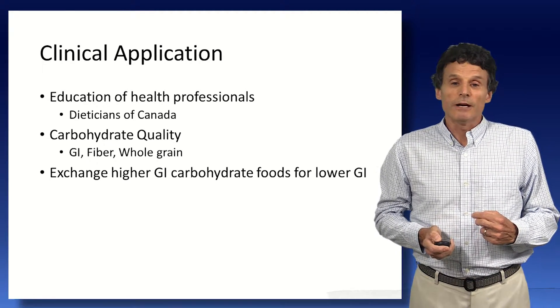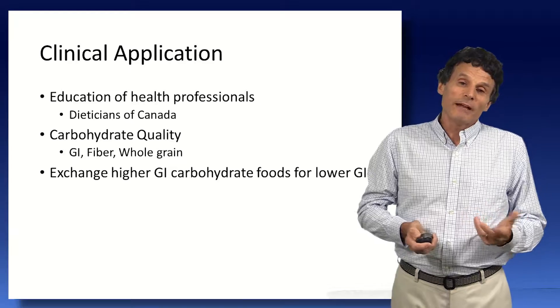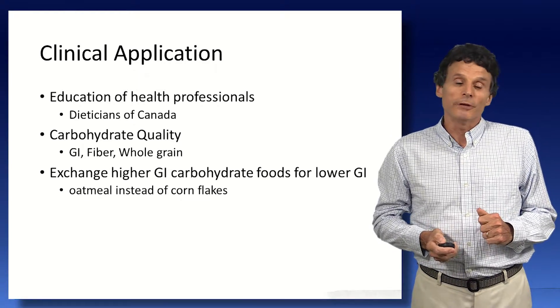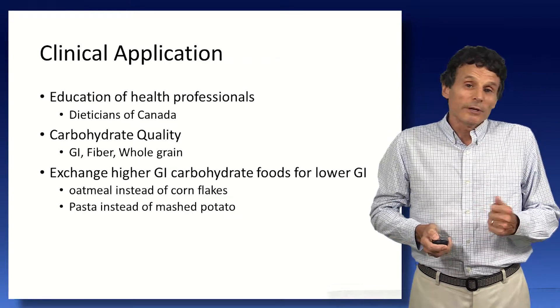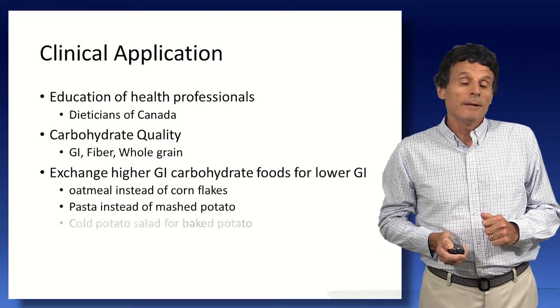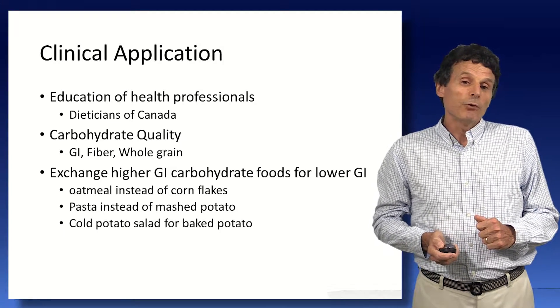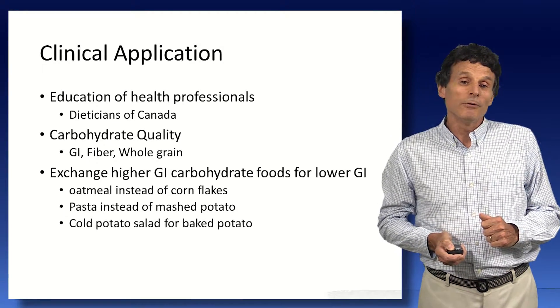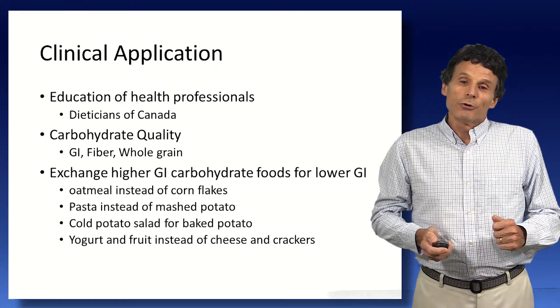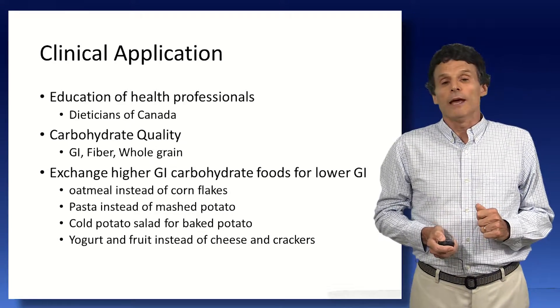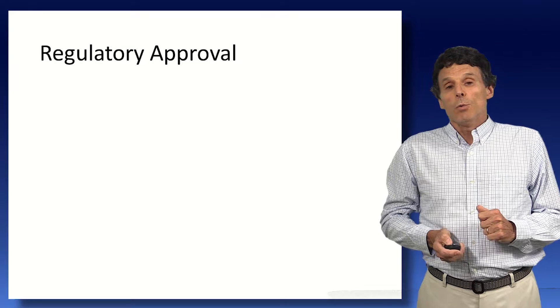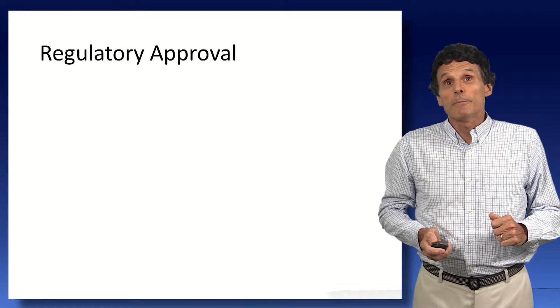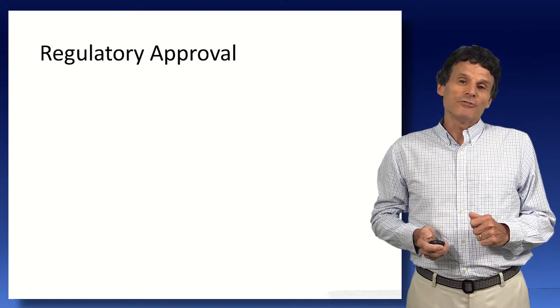And the application is very simple. We simply exchange a higher GI food for a lower one. So at breakfast, instead of having cornflakes, you could have oatmeal. Dinner, you can have pasta instead of mashed potato. If you're having a barbecue, you'd have cold potato salad instead of hot baked potato. If you're having a snack, yogurt and fruit instead of cheese and crackers, for example.